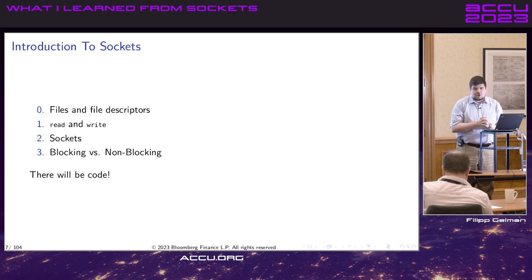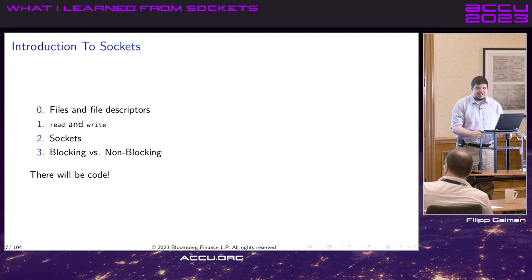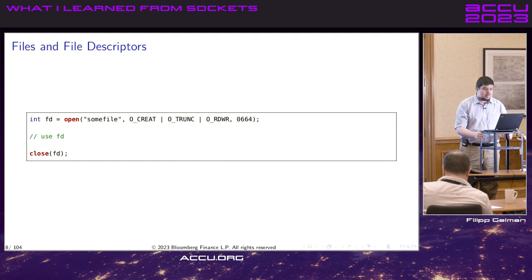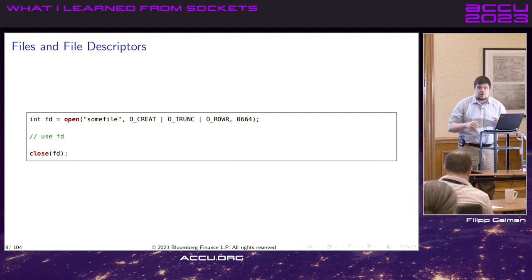Before we get to Select and Sockets, we should look at file descriptors. In Unix, everything is a file. We open a file, we use it, then we close it. When we open a file, we get back an integer — that's a file descriptor. The integer is kind of like an index into a per-process table of open things. That's really all there is to it.